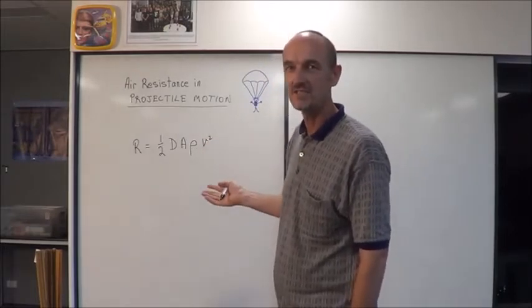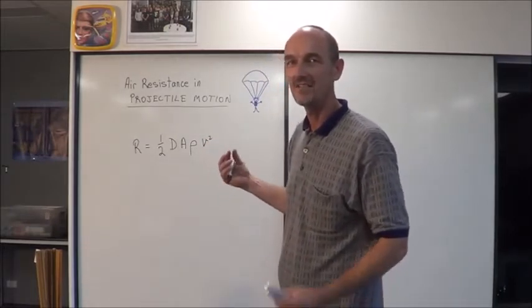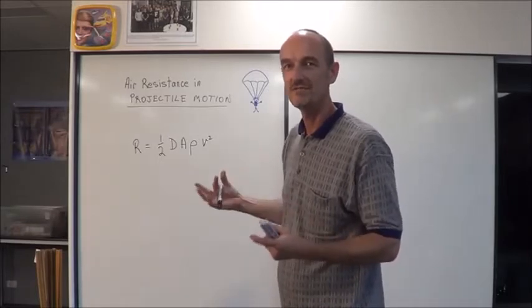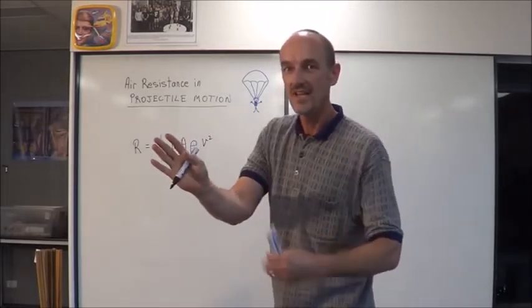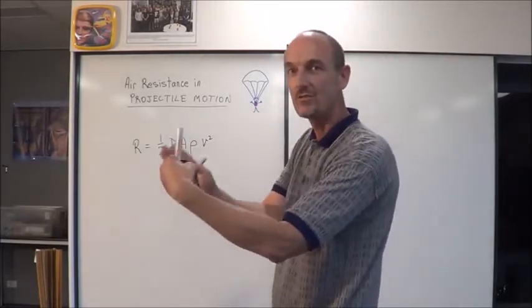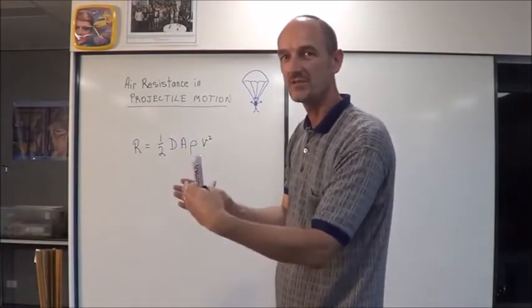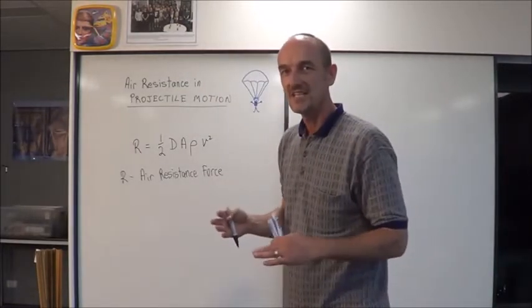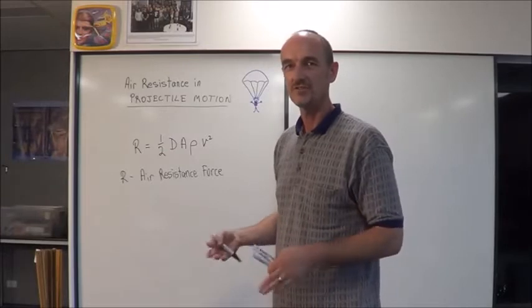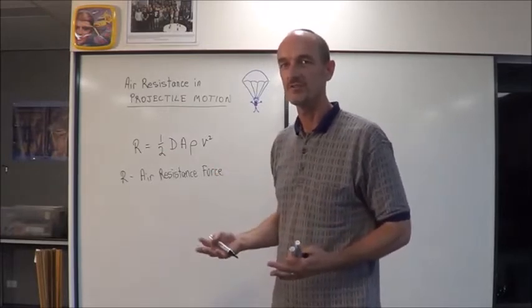R stands for air resistance. R is a resistive force, so if something is moving forward, then air resistance acts to oppose the motion. That's the first key thing. Air resistance is a force measured in newtons that opposes the motion of an object.